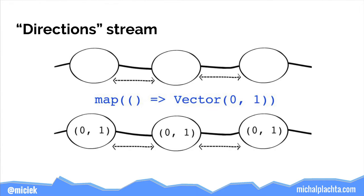We take the tick stream and map it using a provided function to get a new immutable stream called the direction stream, because it outputs the new direction the snake should take next. We are mapping with a function that always returns vector (0, 1), so the output stream is that vector output every 100 milliseconds.